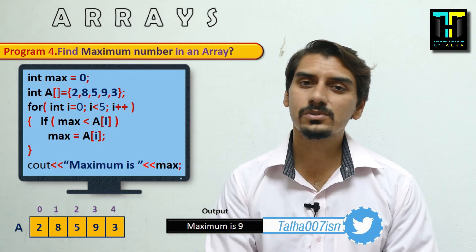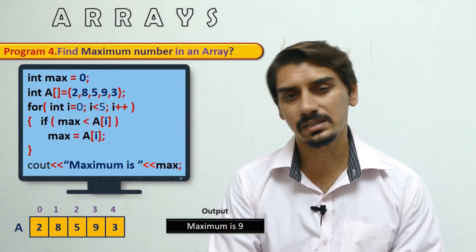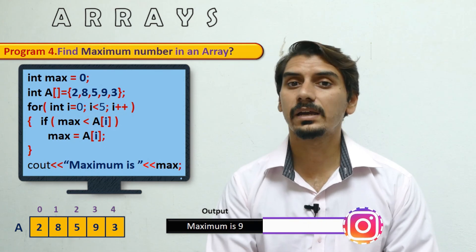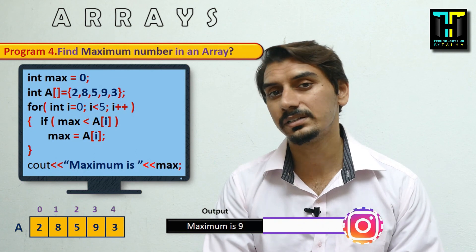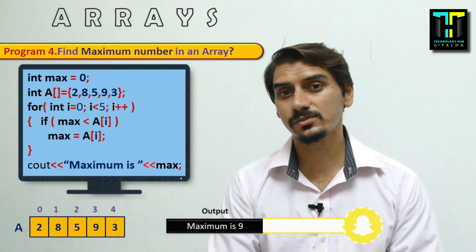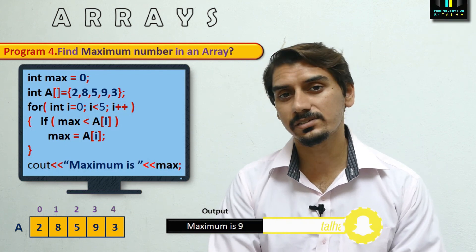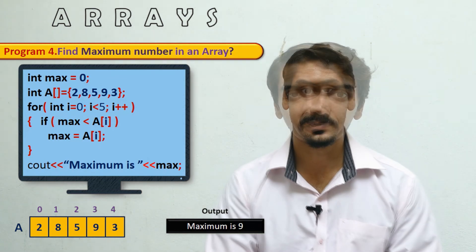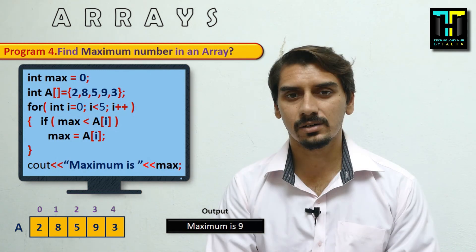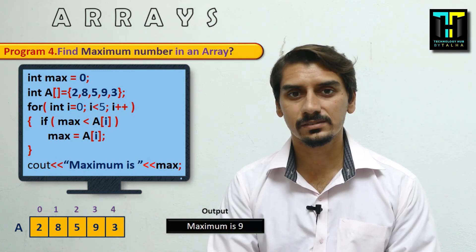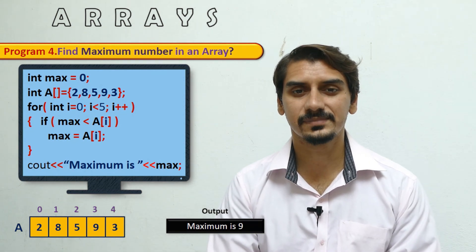It is very easy for us to use arrays when managing multiple elements of the same type. We can also apply sorting techniques like selection sort, merge sort, and bubble sort, as well as searching techniques like linear search and binary search. Thank you so much for watching, and don't forget to subscribe to Technology of Talha.